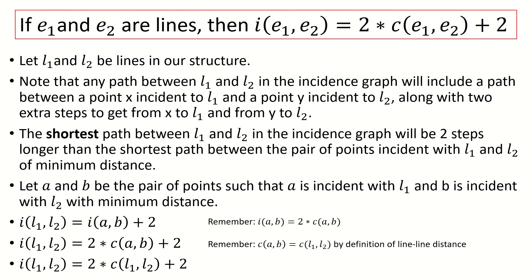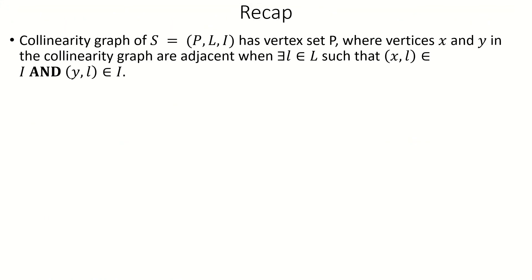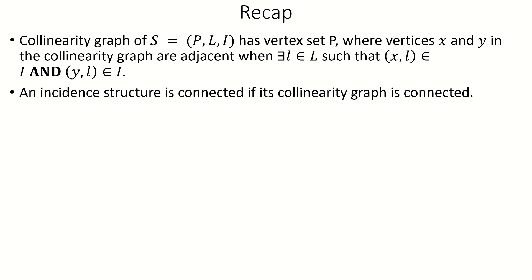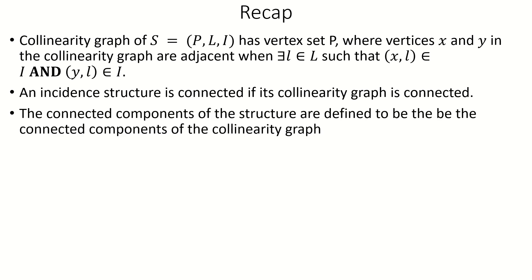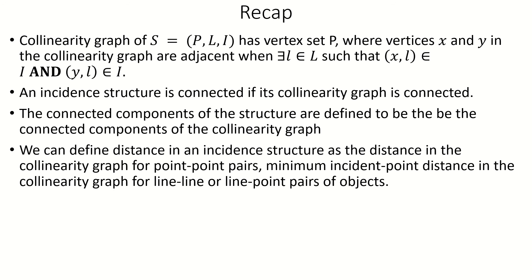Let's do a quick recap. The collinearity graph of an incident structure with point set P is a graph with vertex set P, in which a pair of vertices are adjacent if there exists some line in the incident structure such that both vertices are incident to that line. Collinearity graphs let us define connectivity and connected components for an incident structure. Like incidence graphs, collinearity graphs let us define a notion of distance in an incidence structure, and the collinearity graph-based distance has a known relationship to incidence graph-based distance according to the theorem we proved.